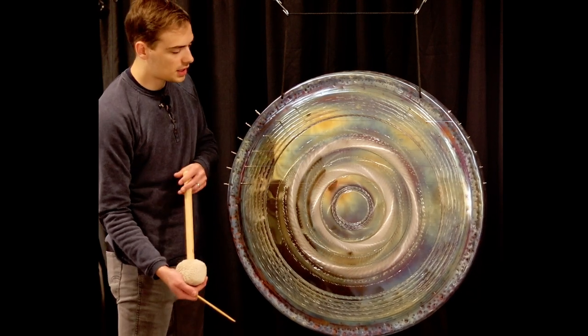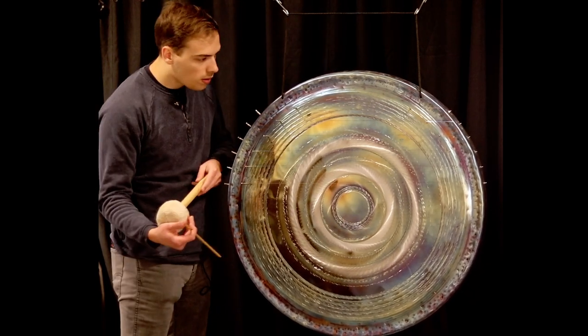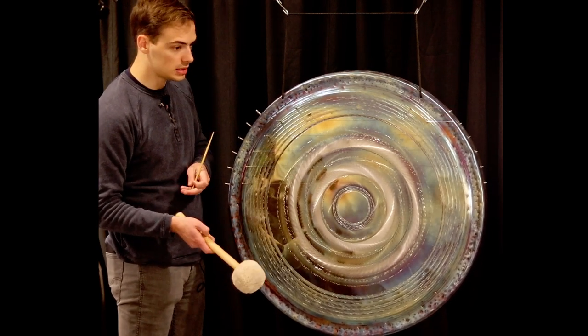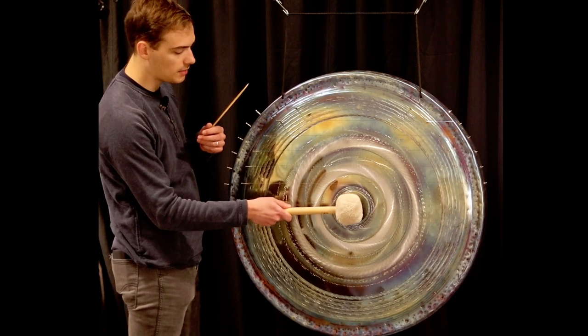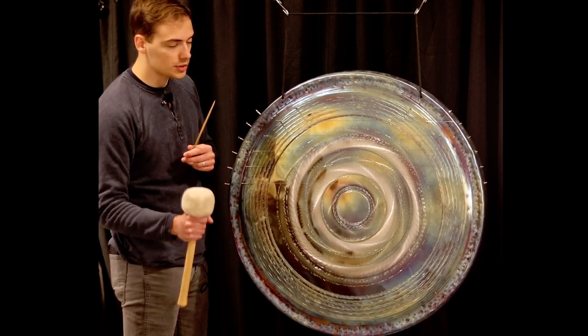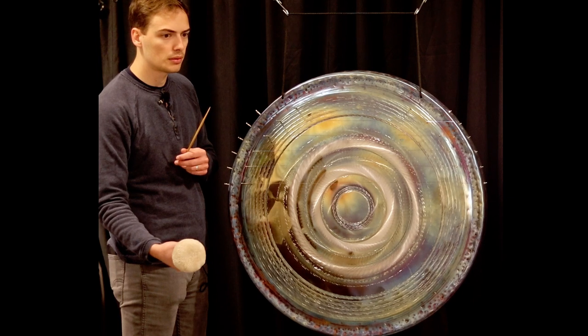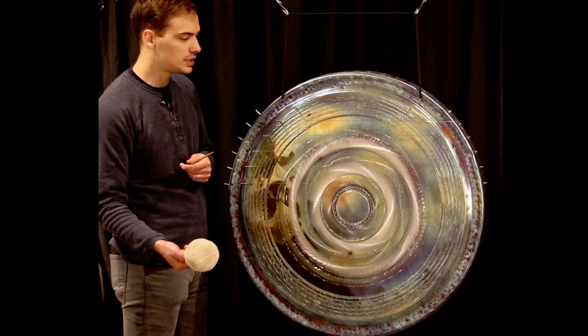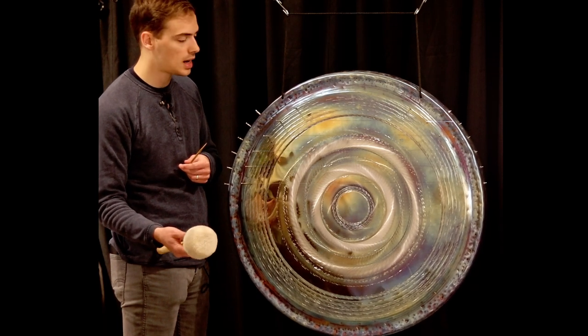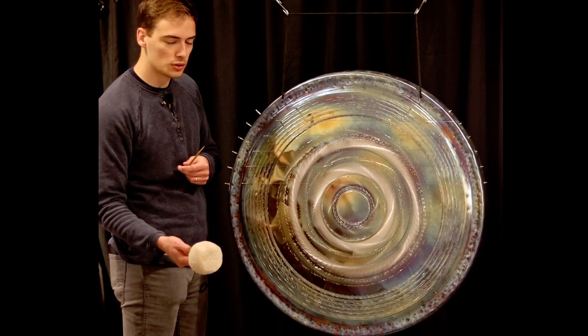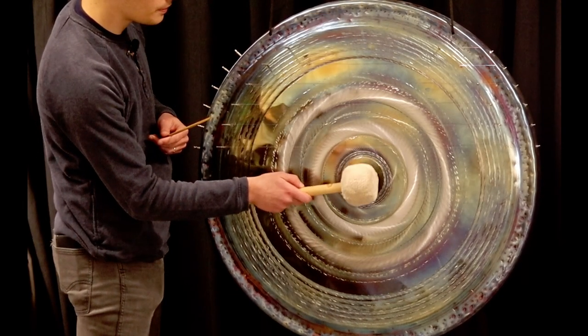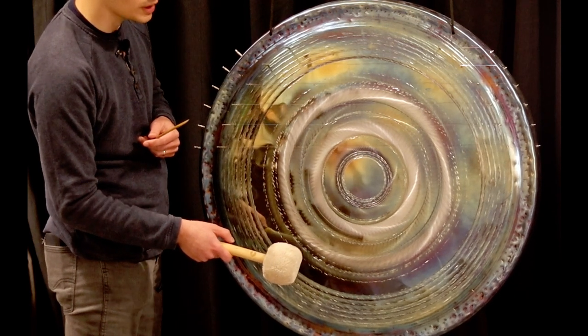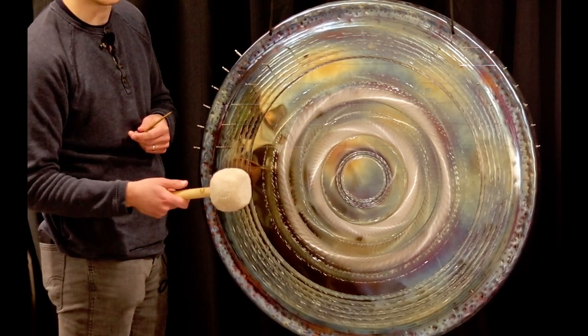And so once you have the gong set up in whichever tuning you choose, then you're ready to play. The main way is going to be, if it's one person, stick in one hand, mallet in the other. Grata Sonora also recommends the Lava Flumies from Ali Hass. 60 or 50 millimeter size, but I'm sure any Flumie would work great on it.